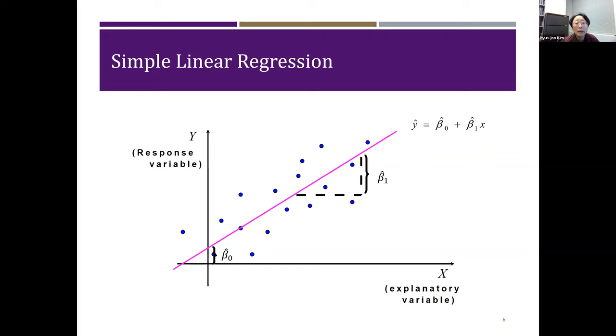These beta nought and beta 1 are parameters. Typically, we deal with sample data, a subset of population. We can estimate those betas. Those estimates, we call beta nought hat and beta 1 hat.